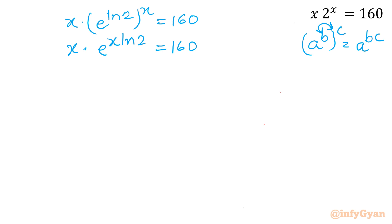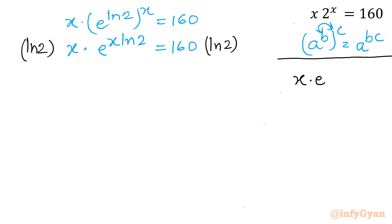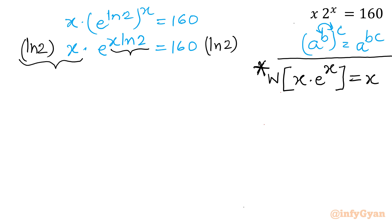Now I am going to multiply both sides by ln 2. The reason is to maintain the form where the exponent and the coefficient of e are identical — both x ln 2 — so that we can apply the Lambert W function property. Once the expression is in the form (x ln 2) times e raised to the power (x ln 2), applying the Lambert W function to both sides gives x ln 2 on the left and W of 160 ln 2 on the right.